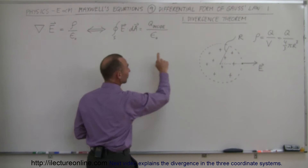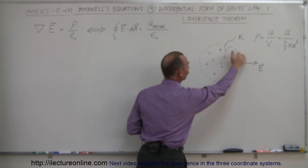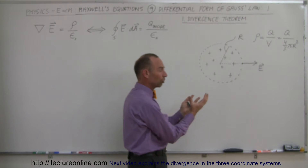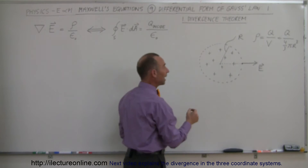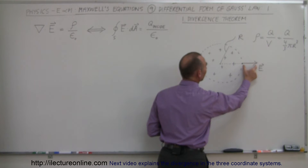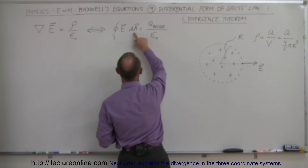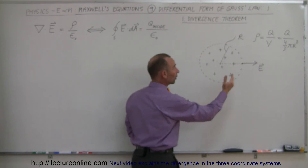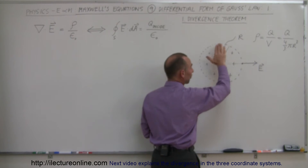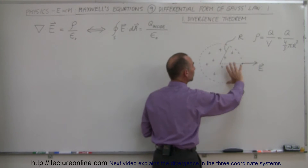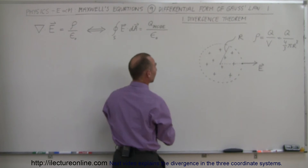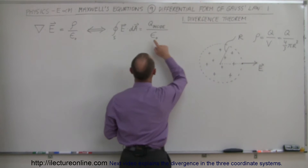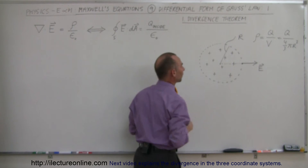Gauss's Law states that if we take the strength of the electric field at the surface — we take an imaginary surface and engulf the charge with an imaginary surface called the Gaussian surface — and if we multiply the electric field times the area of the Gaussian surface, knowing that the magnitude of the electric field will be the same in any direction (the direction will differ, but the magnitude is the same), and we integrate — multiply the electric field strength times the surface area — that will always equal the charge inside that surface divided by epsilon sub nought.